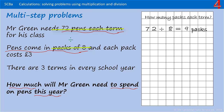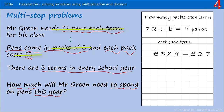Now we need to know the cost for each term. Each packet of pens costs three pounds. If he buys nine packets of pens a term at three pounds each packet, that's three pounds times by nine, which is 27 pounds. So each term Mr Green spends 27 pounds on pens.